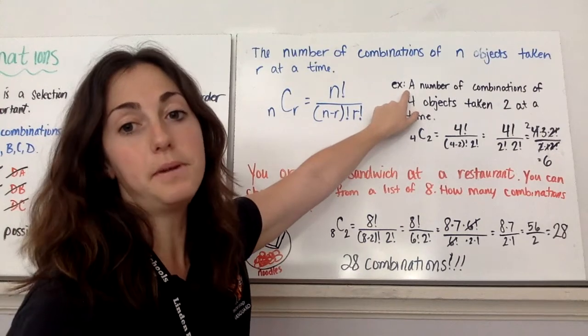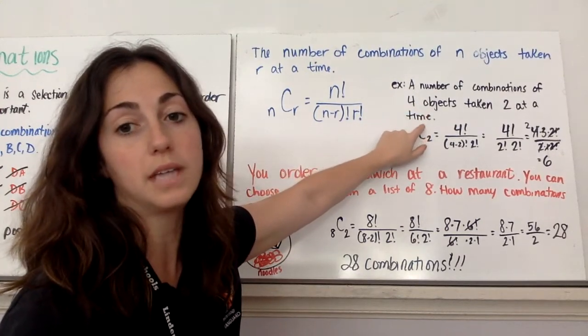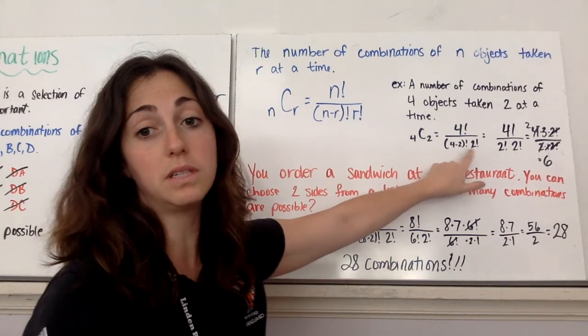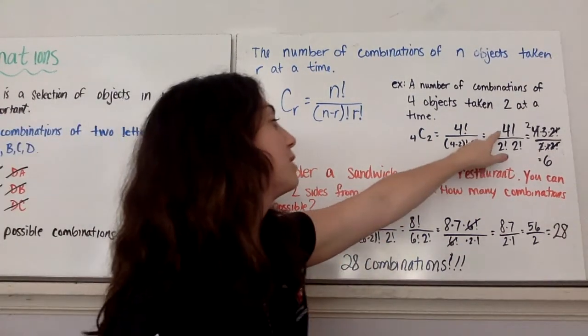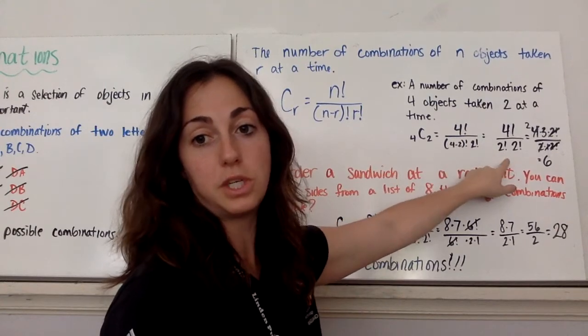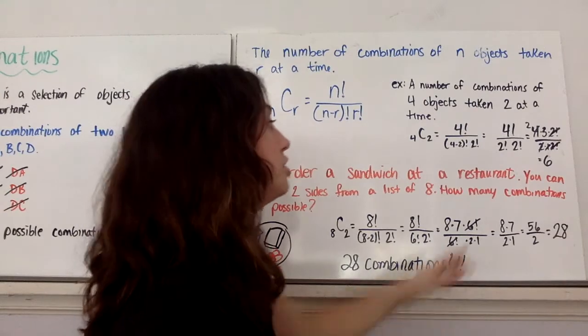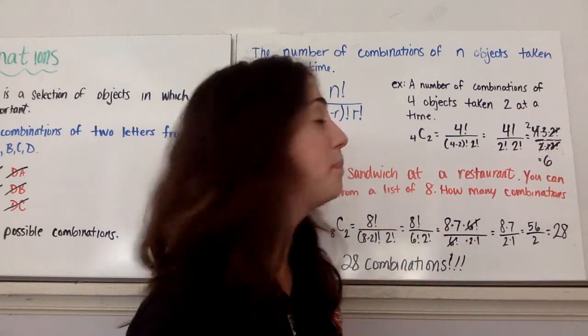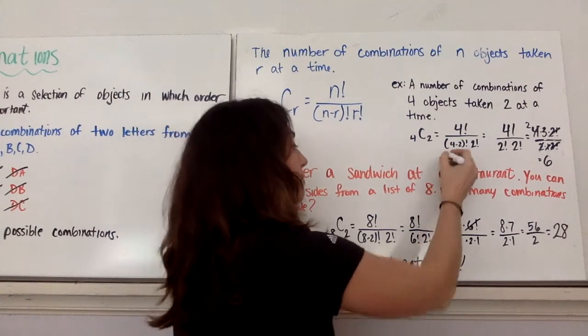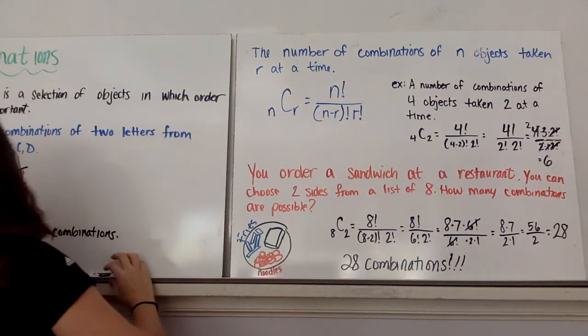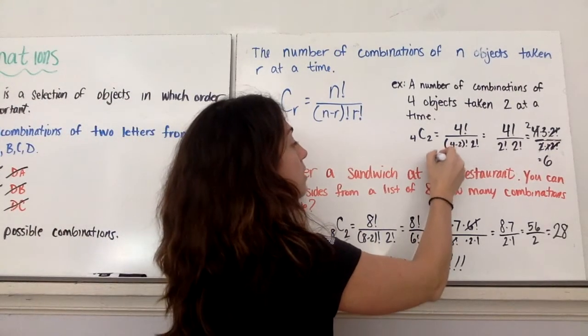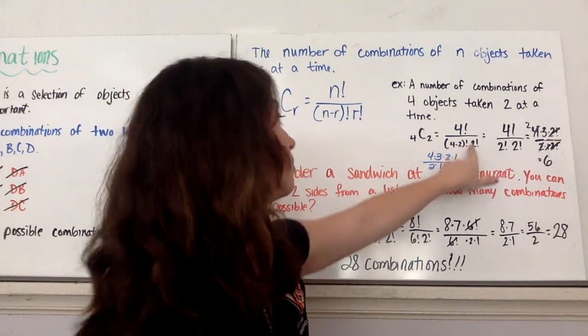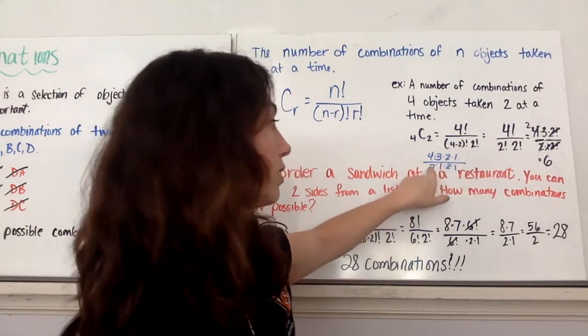So for example, a number of combinations of four objects taken two at a time is 4, C, 2. So then I have 4 factorial over 4 minus 2 factorial times 2 factorial. So I have 4 factorial over 4 minus 2 is 2. So I have 2 factorial times 2 factorial. And then, as you know, 4 factorial is 4 times 3 times 2 times 1. And 2 factorial is 2 times 1. And 2 factorial is 2 times 1. So there's a lot of canceling out that happens.